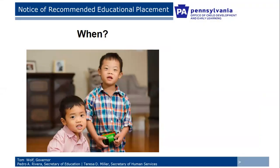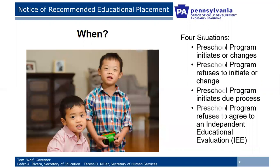When do we issue a NORIP? These four situations are directly from Chapter 14. If the program initiates or changes the identification, evaluation, educational placement, or a FAPE change for a child — which is when most of you are issuing a NORIP most often. If the program refuses to initiate or change the above when requested, if the program initiates due process, or if the program refuses to agree to an independent educational evaluation.